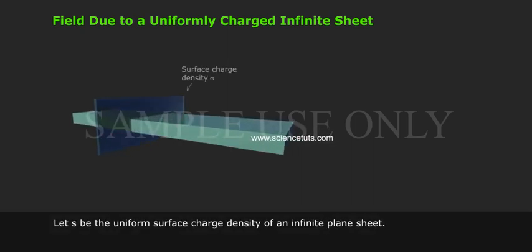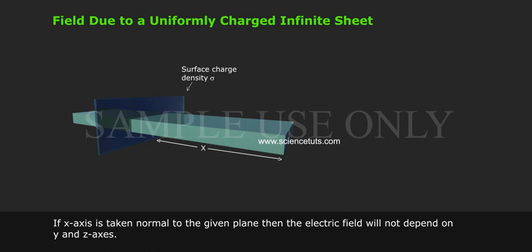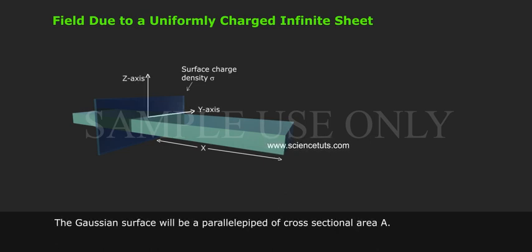Note: SI unit of λ is C/m. Field due to a uniformly charged infinite sheet. Let σ be the uniform surface charge density of an infinite plane sheet. If X-axis is taken normal to the given plane, then the electric field will not depend on Y and Z axes. The Gaussian surface will be a parallelepiped of cross-sectional area A.